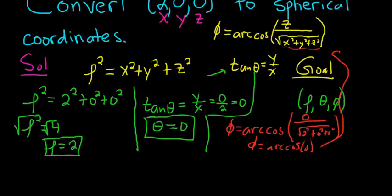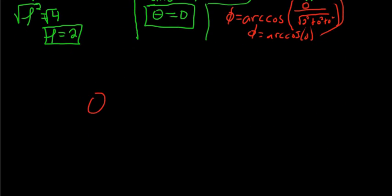Let me scroll down and explain this. Phi is the arc cosine of 0. That means that the cosine of phi is equal to 0.